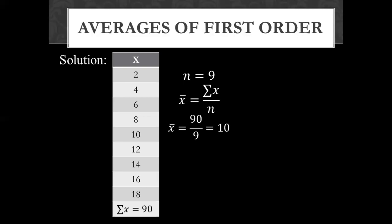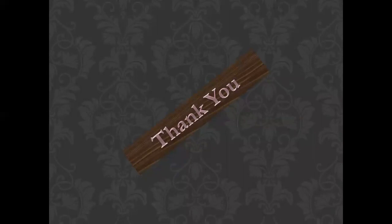Now, how many total number of values do we have? Counting: 1, 2, 3, 4, 5, 6, 7, 8, 9 — so n equals 9. Now x-bar equals summation x over n, which is 90 over 9, giving us a mean of 10. So the arithmetic mean of the given variables is 10.